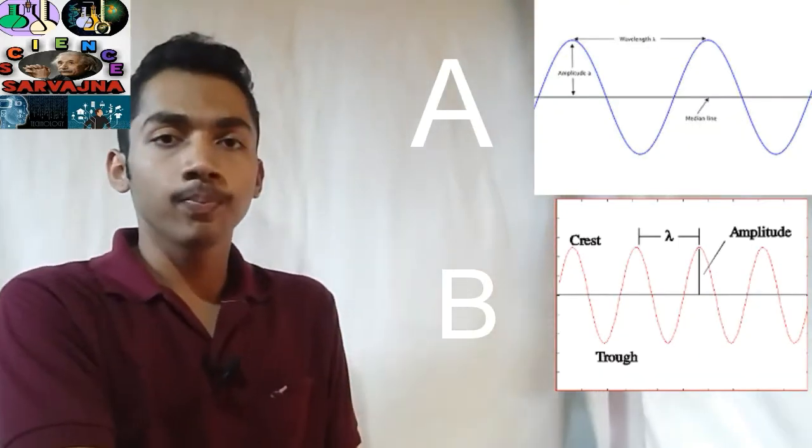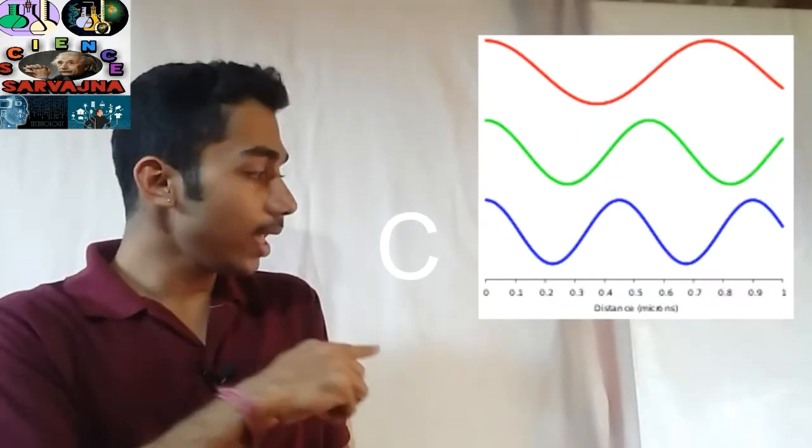Superposition of waves is nothing but if there are two waves, let it be A and B, when they superpose we will get a wave C which will be like this. Just added wave A and wave B and got wave C.